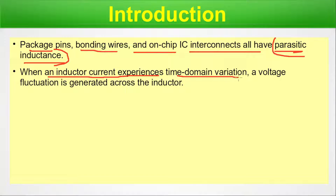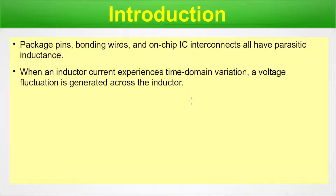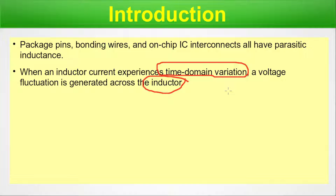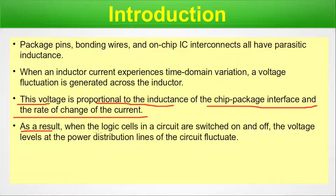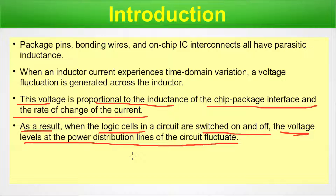When an inductor current experiences time-domain variation — that is, transient behavior — a voltage fluctuation is generated across the inductor. Because RC and L coexist in the VLSI chip, transient effects impact all of them, generating side effects including ground bounce. This voltage is proportional to the inductance of the chip-package interface and the rate of change of current, which impacts the voltage levels at the power distribution lines.